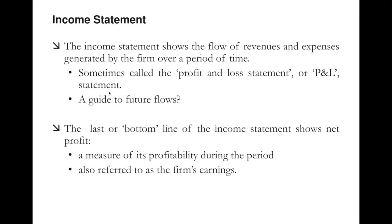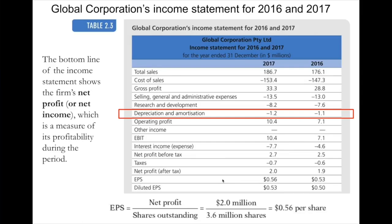At the bottom of the income statement, we have two important ratios: EPS and diluted EPS. EPS, earnings per share, is calculated as net profit after tax divided by number of shares outstanding. Diluted EPS is net profit after tax divided by current outstanding shares plus additional convertible shares. The income statement shows the flow of revenues and expenses generated by the firm over a period of time, sometimes called the profit and loss or P&L statement. It is not necessarily a guide to future cash flows or future profitability. Analysing the trend across time is a basic skill here.